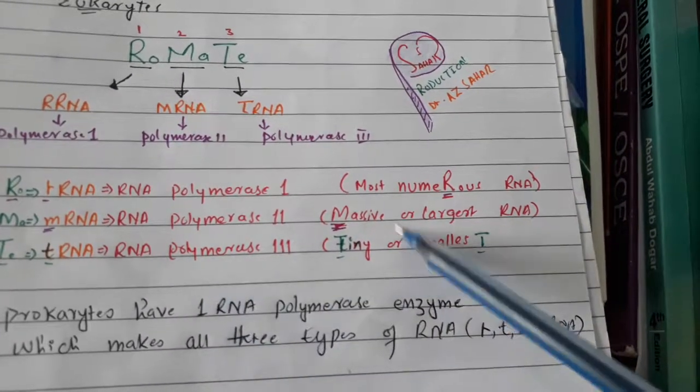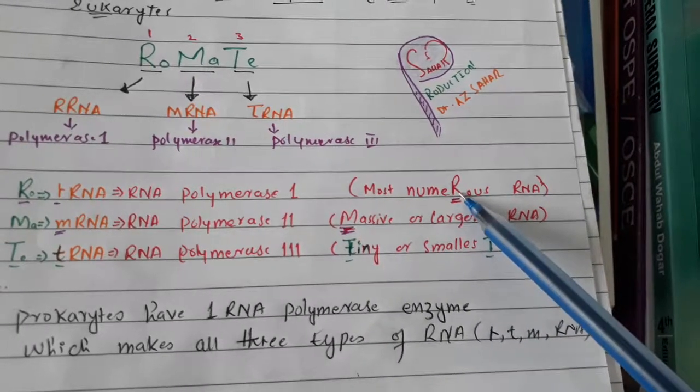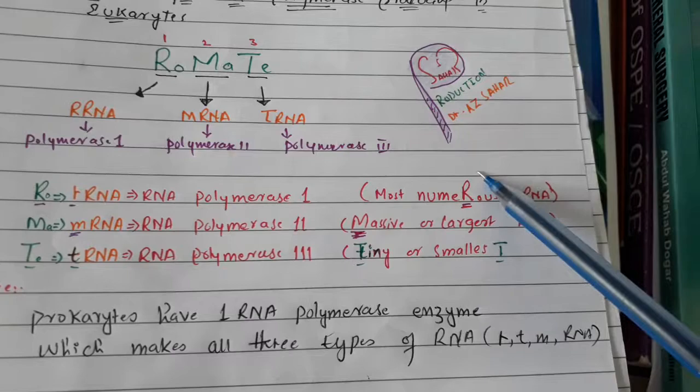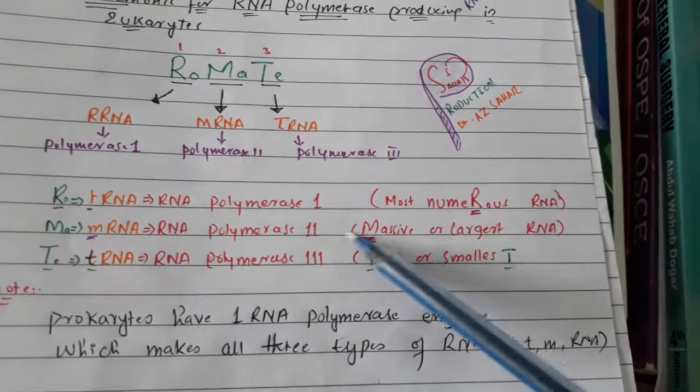Which one of these RNAs is the most numerous? In numerous you see this is R, so you will remember this big R for numerous. R, so rRNA is the most numerous. M is for massive.